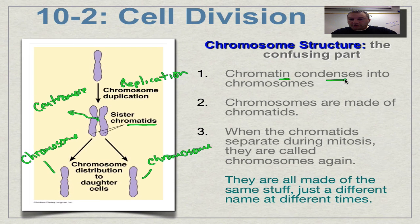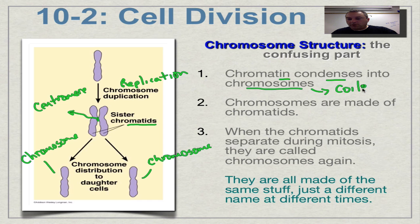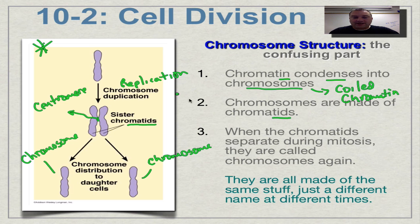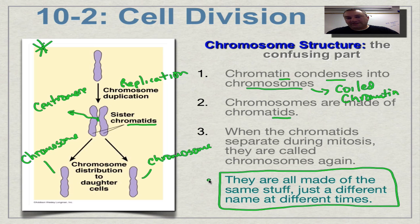Chromatin is long and thin — it's DNA wrapped around histones — and it coils up to form a chromosome. Think of a chromosome as coiled chromatin. For replicated chromosomes in that X shape, half the X is called a chromatid. When the chromatids separate, they're not called chromatids anymore; they're called chromosomes. They all get different names at different times, even though they're all the exact same stuff.